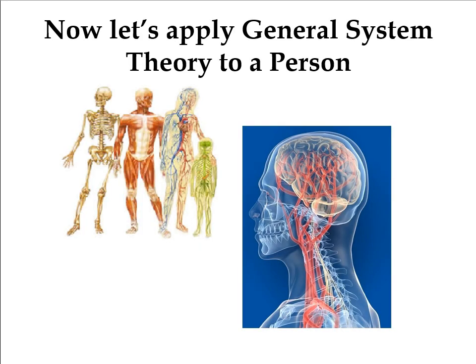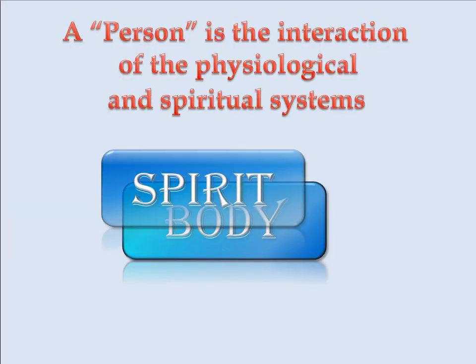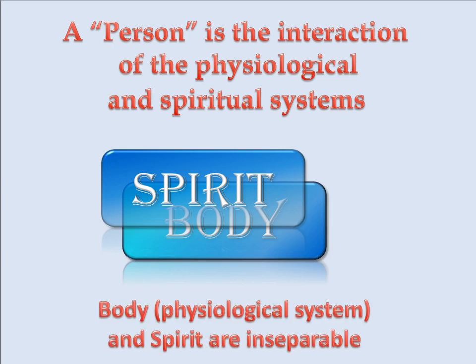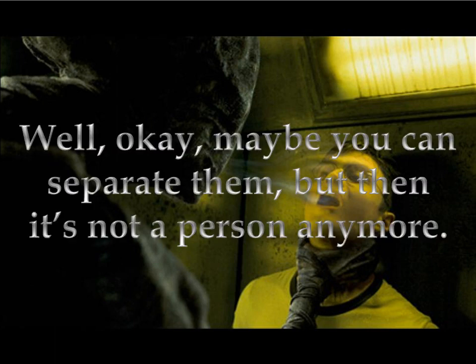Now let's apply general system theory to a person and to health. A person is the interaction of the physiological system — the body — and the spiritual system. This body-spirit union is inseparable; well, maybe you can separate them, but then it's no longer a person.